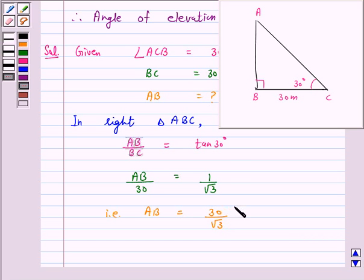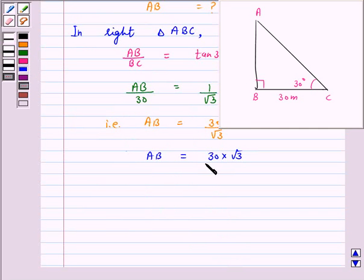Now, multiply the numerator and denominator by root 3. We get AB is equal to 30 times root 3 over root 3 times root 3.